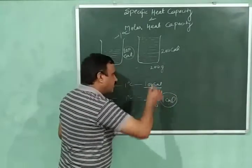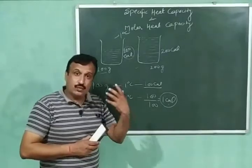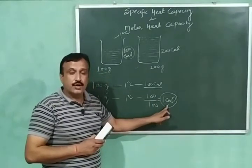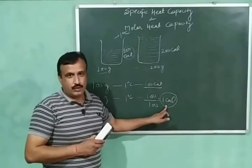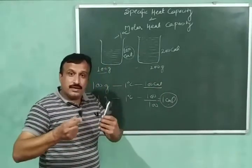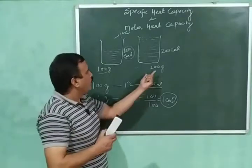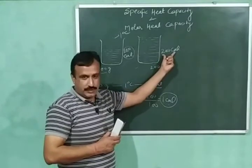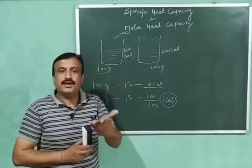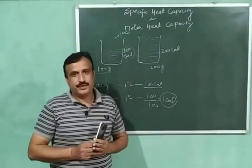This 1 calorie is the amount of heat required to increase the temperature of 1 gram of water, so this is the specific heat capacity of water. Now if we increase the amount of water to 200 grams, the specific heat capacity again comes out to be 1 calorie per gram — because 200 calories divided by 200 grams equals 1 calorie per gram. So specific heat capacity is independent of mass and it is an intensive property.